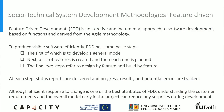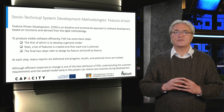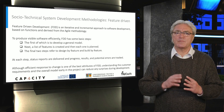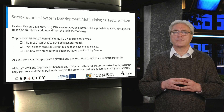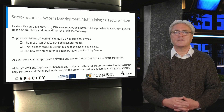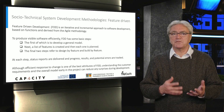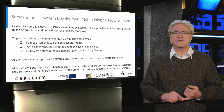In this slide, we explain the socio-technical system development methodology: feature-driven development, FDD. FDD is an iterative and incremental approach to software development based on functions and derived from the agile methodology. FDD is typically seen as an older methodology, a kind of precursor to modern lean agile implementations. FDD's goal is to deliver working software frequently and is a customer-centric approach, making it a good choice for smaller development teams and allowing for fast deliveries every two weeks. To produce visible software efficiently, FDD has some basic steps, the first of which is to develop a general model.